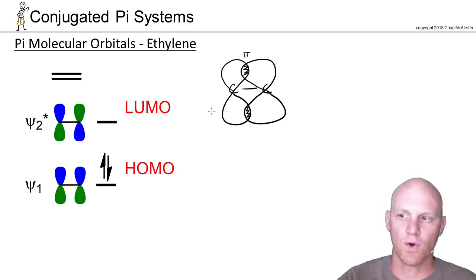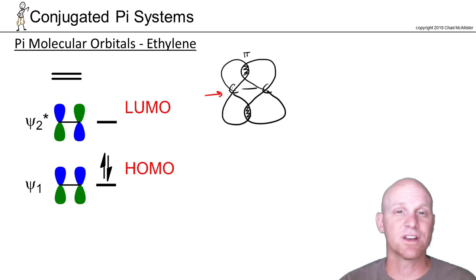If you guys recall, a p orbital has this node at the nucleus. It has this node at the nucleus and therefore you're crossing through zero. The wave function has a value of zero there and therefore zero probability of finding an electron there.